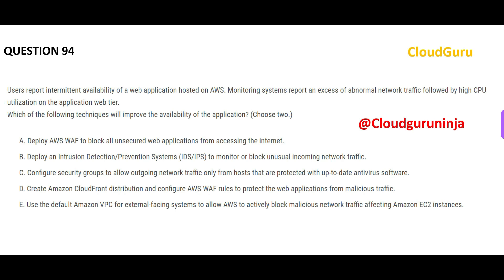Now let's look at the next question. Users are reporting intermittent availability of a web application — sometimes it goes down, sometimes it is up. When investigating, you see abnormal network traffic followed by high CPU utilization. Suddenly a large number of users tried accessing it, causing CPU utilization to spike very high. You have to choose two answers for this web tier application.